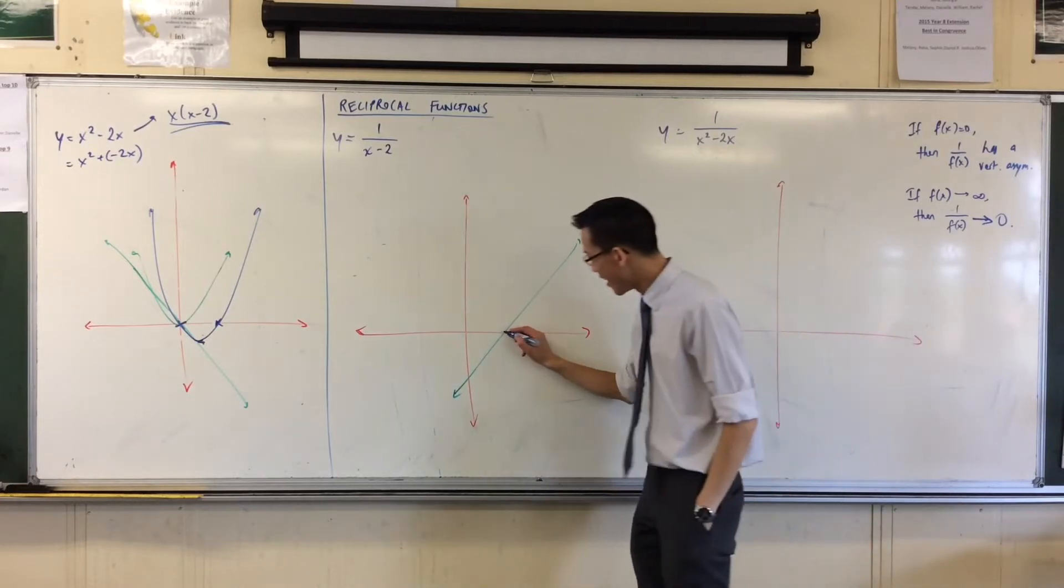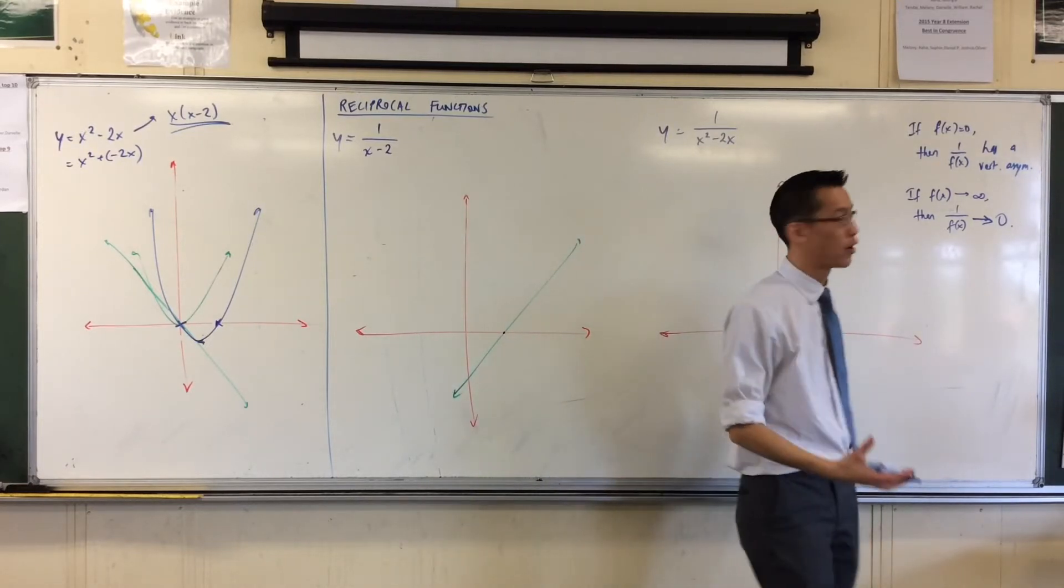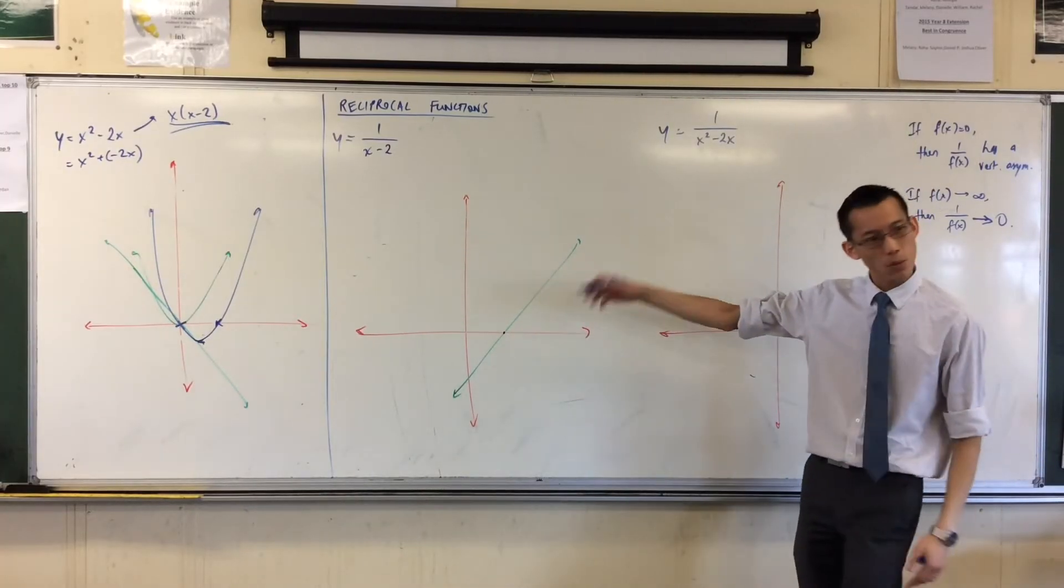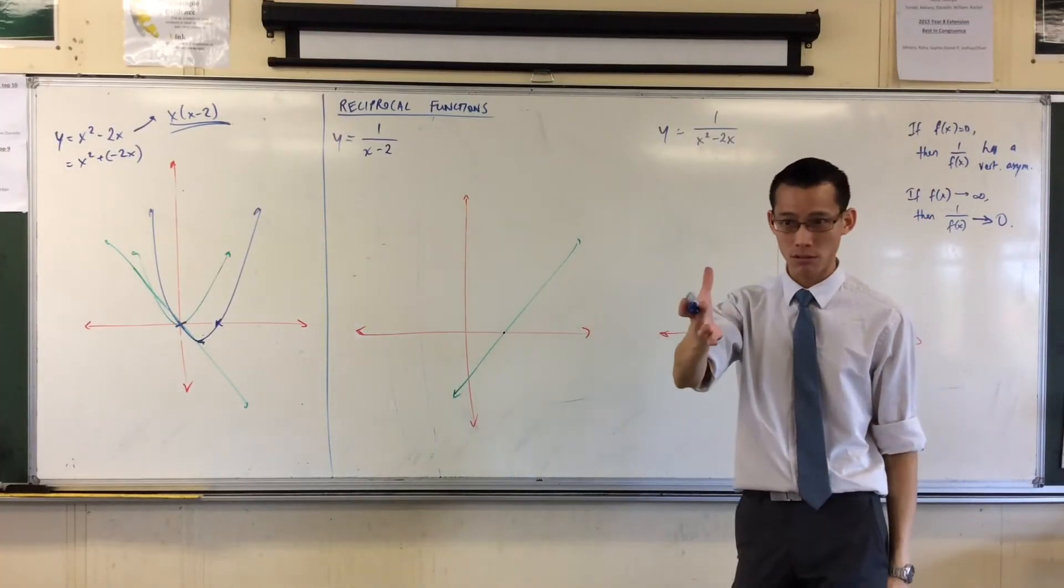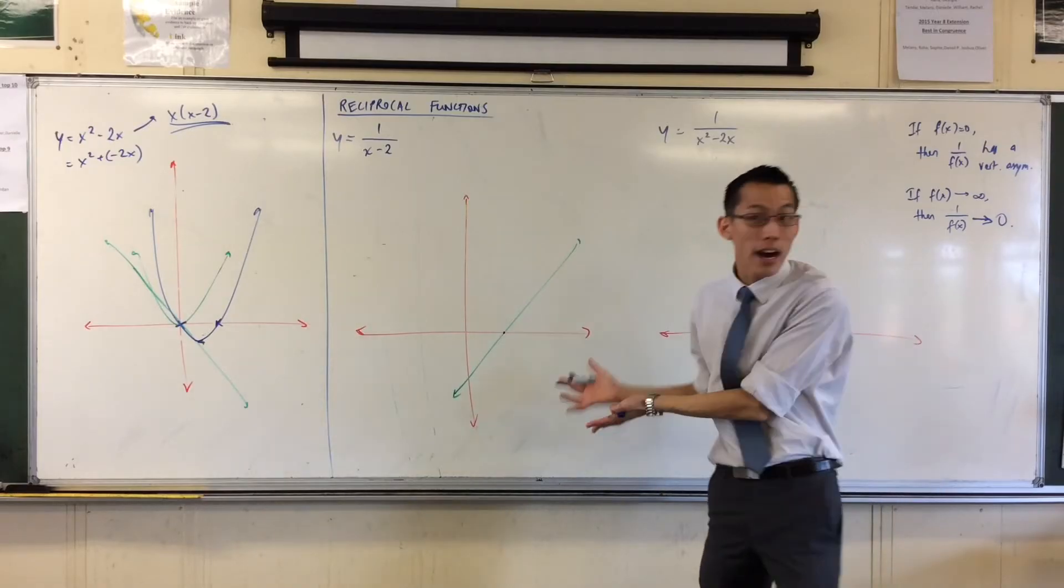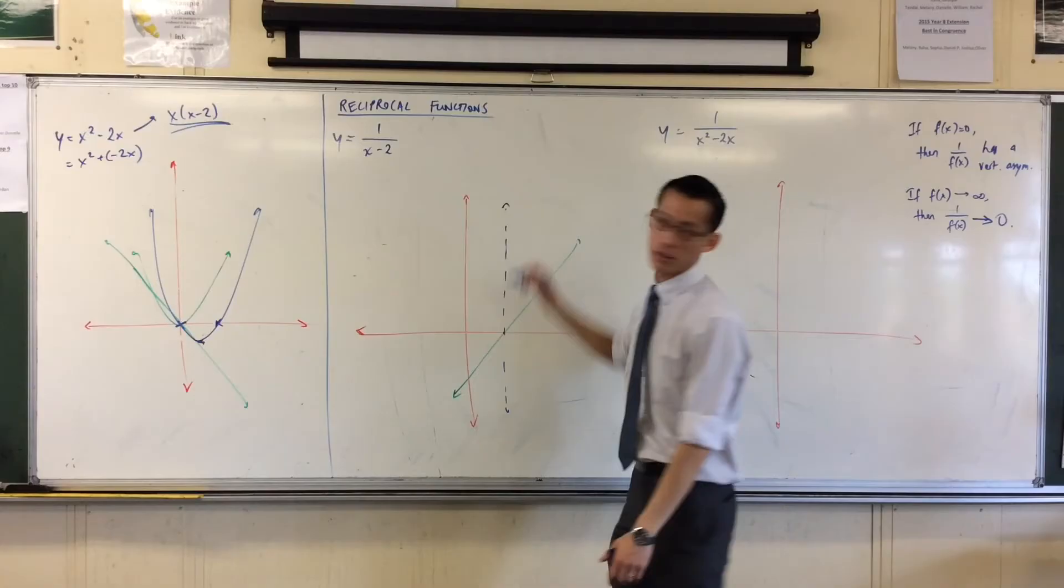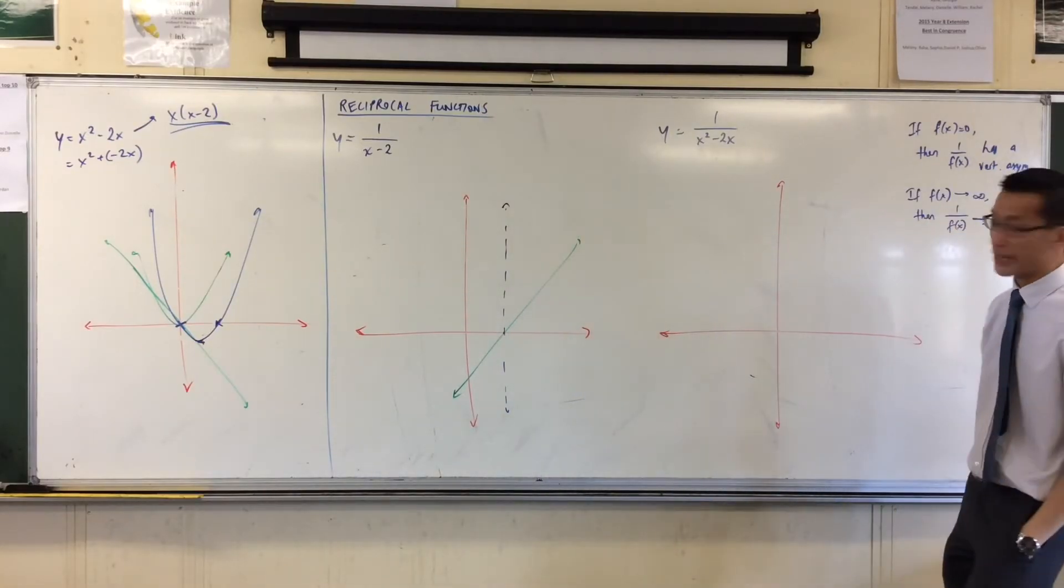So, for example, here, here's the first important point I notice. This guy here, the function is zero there. So when I think about its reciprocal, I ought to be expecting, well, I can't exist there. So I'm going to pop a vertical asymptote through there. Are you okay with that?